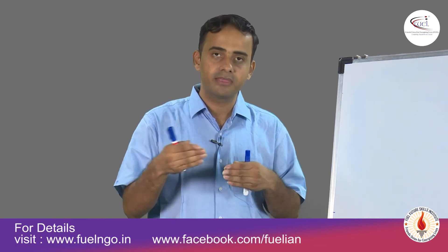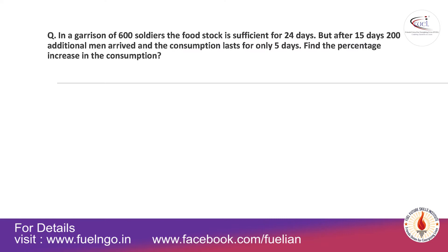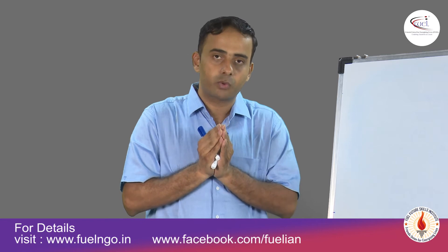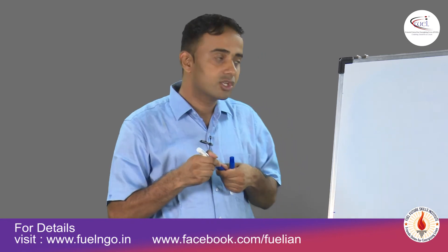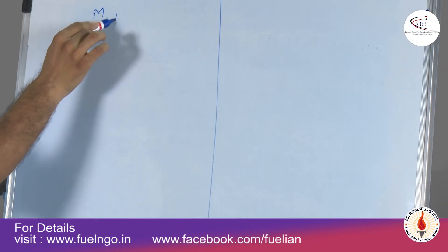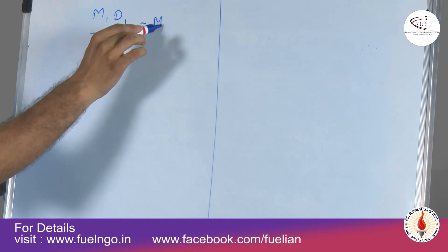In a garrison of 600 soldiers the food stock is sufficient for 24 days. But after 15 days, 200 additional men arrive and the consumption lasts for only 5 more days. Find the percentage increase in consumption. Let's interpret this from the perspective of work equivalence: M1D1/W1 = M2D2/W2.